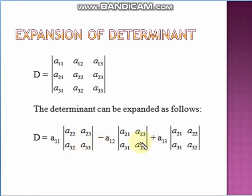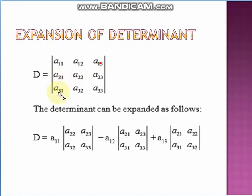To obtain the 2×2 sub-determinants: for a11, omit the first column and first row, and write the determinant of remaining elements a22, a23, a32, a33. For a12, omit the second column and first row, giving the determinant of a21, a23, a31, a33. For a13, omit the third column and first row, giving the determinant of a21, a22, a31, a32. You can remember this as a formula.